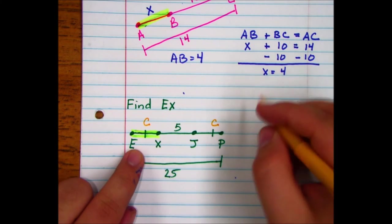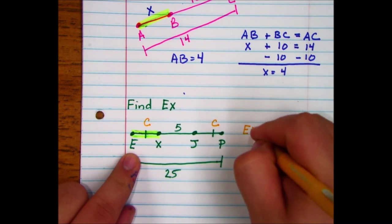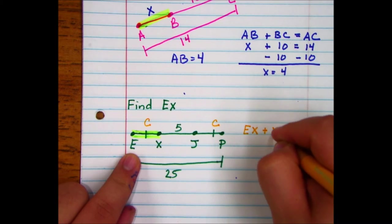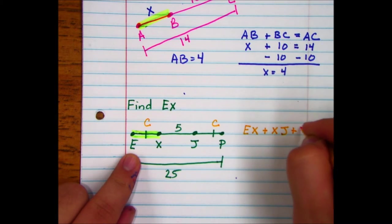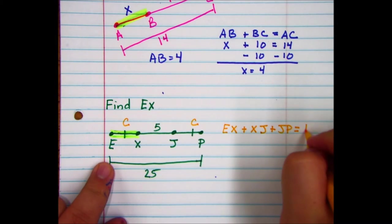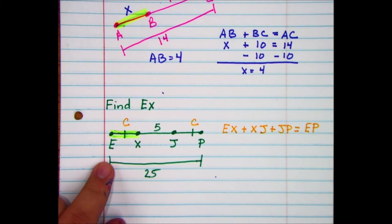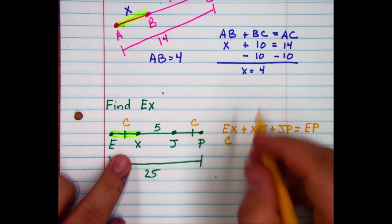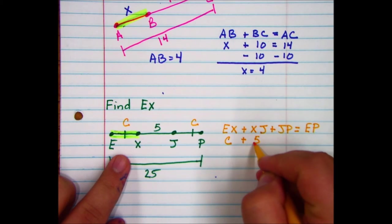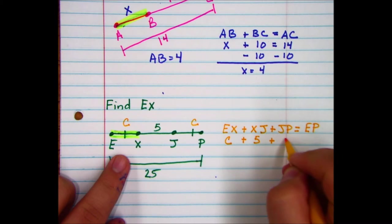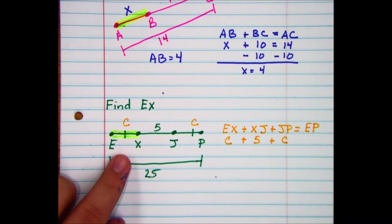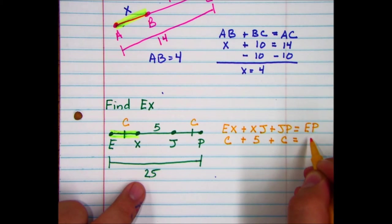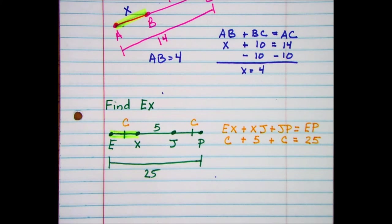Now in previous examples, we've taken EX plus XJ plus JP, and that equaled the entire segment, in our case, EP. EX is x, XJ is 5, and JP is x, which is going to equal the entire segment, which is 25.